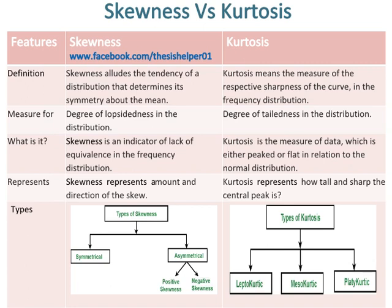The measure for skewness is the degree of lopsidedness in the distribution, whereas kurtosis measures the degree of tailedness in the distribution. Skewness is an indicator of lack of equivalence in the frequency distribution, whereas kurtosis is the measure of data which is either peaked or flat relative to the normal distribution. Skewness represents the amount and direction of the skew, whereas kurtosis represents how tall and sharp the central peak is.